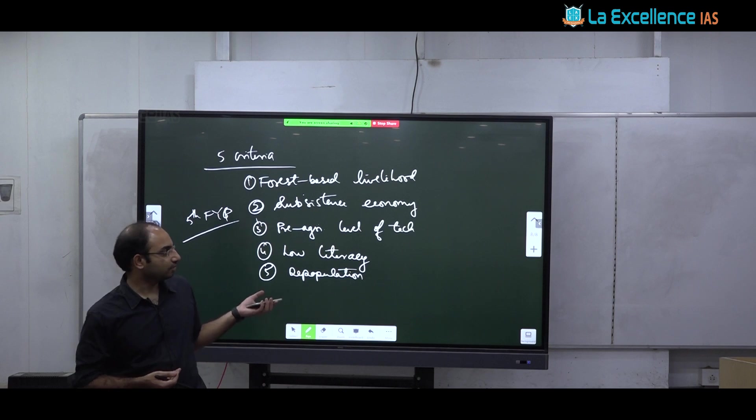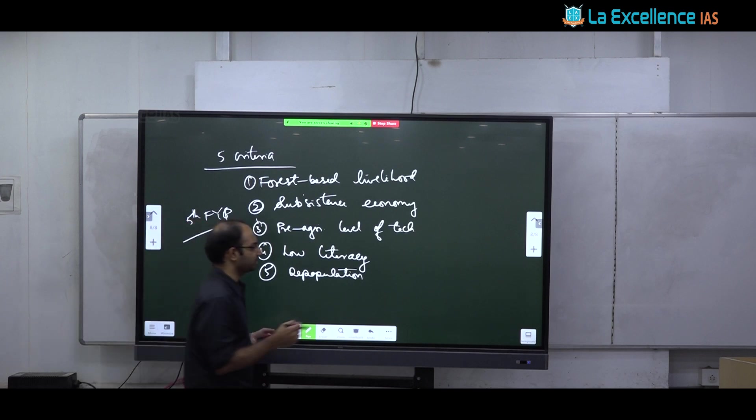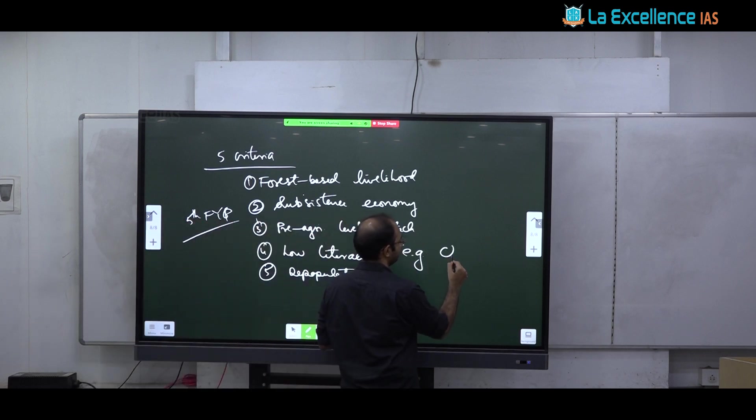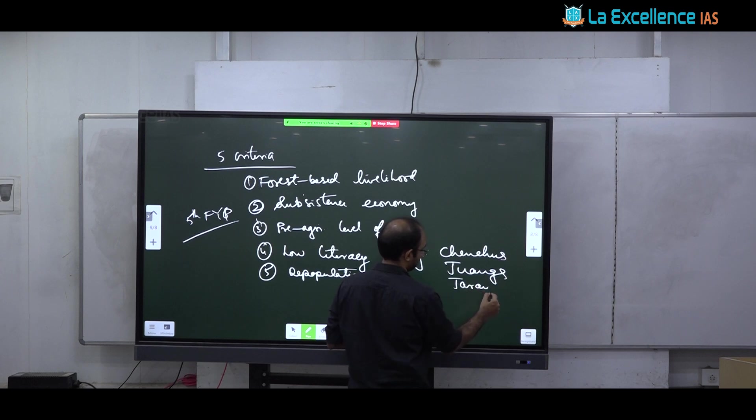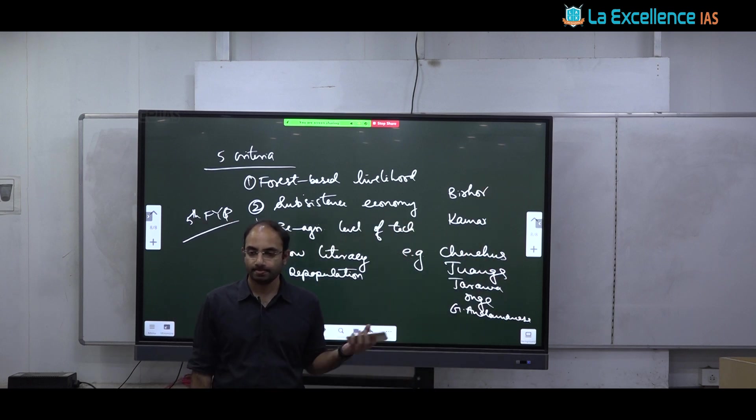And then this criteria was evolved in fifth 5 year plan. And then you can talk about the problems, special problems faced by PVTG. One hunger, two loss of forest, three loss of livelihood. Then land alienation, indebtedness, poor infrastructure and connectivity. Some of them live in villages which have almost no connectivity at all on hill tops. So you have a range of challenges and give some examples of PVTG. We have many examples. Chenchu's are a PVTG.